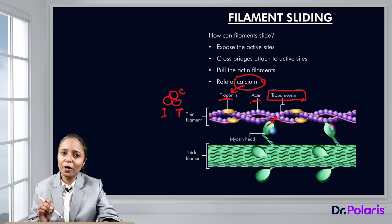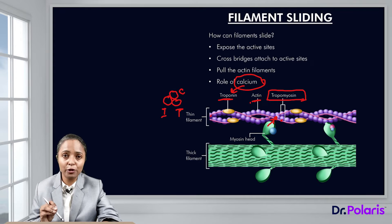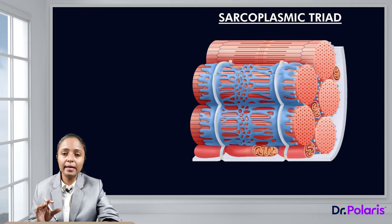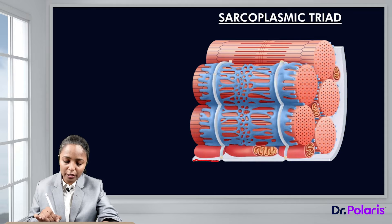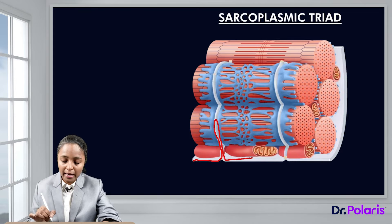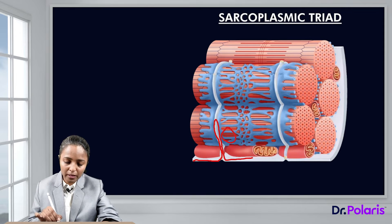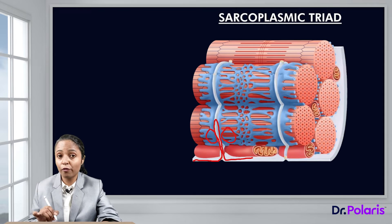For this, we obviously need calcium present in the sarcoplasm. There should be a mechanism for the release of calcium into the sarcoplasm so that it can bind to troponin. There is an apparatus known as the sarcoplasmic triad which causes the release of calcium. Here, there is an invagination of the plasma membrane of the muscle fiber forming a T-tubule, and beside these T-tubules there is sarcoplasmic reticulum, which is the store of calcium.